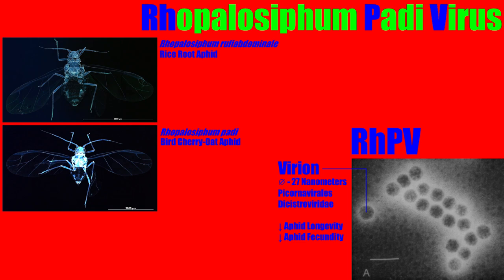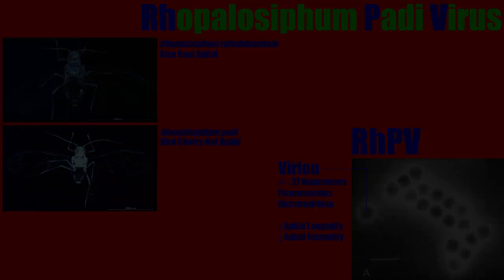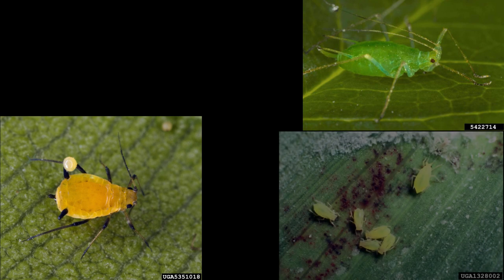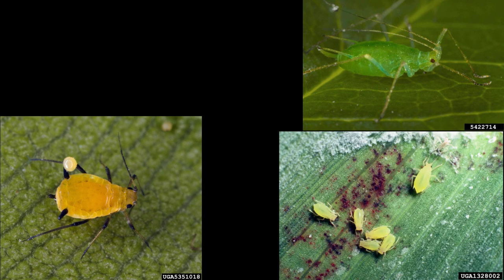Called the Rhopalcyphum pativirus, abbreviated as RHPV, and named after the bird chariot aphid, it was first documented in 1981 and was first known to infect many species of aphids, including the oleander aphid Aephus nereae, the green peach aphid Myasus persicae, and the wheat aphid Chisathus grammonum.